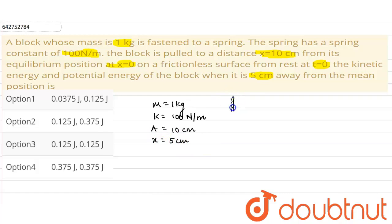If you represent it in a figure, the scenario will be like this. This is our spring having a spring constant of k, and the block is attached to it having a mass of 1 kg. Now it is displaced from the equilibrium position, let's suppose this is our equilibrium position where x equals 0, and it is displaced to a distance of x equals 10 centimeter.